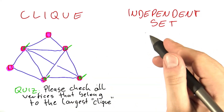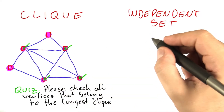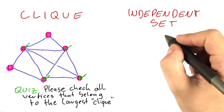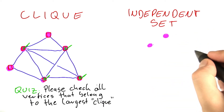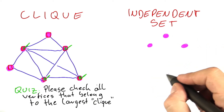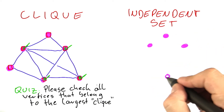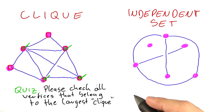And now I'm going to draw a very similar — in a way, very similar — network for independent set. At least I'm going to place the vertices at the same locations, and we'll just see how similar they are.